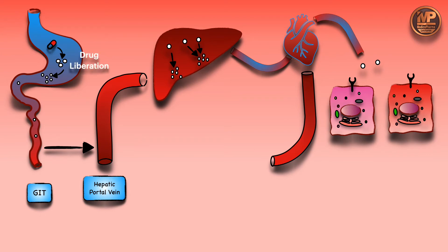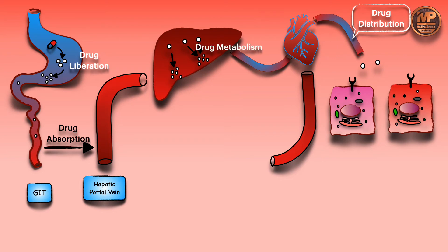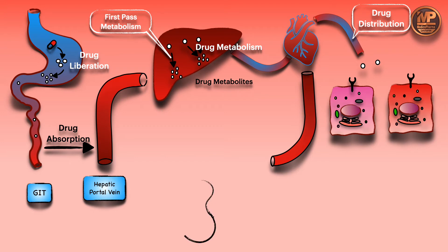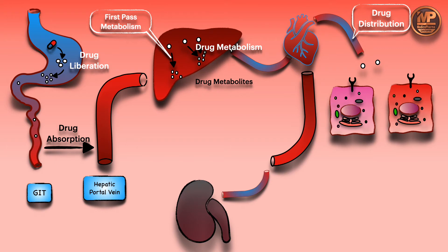To summarize the steps: drug liberation, drug absorption, drug distribution (from the heart to various organs), and drug metabolism (destruction in the liver, including first pass metabolism). The products of metabolism are called drug metabolites. Low molecular weight metabolites go via blood to the kidneys and are excreted in urine — drug excretion. High molecular weight metabolites mix with bile, enter the GIT, and are excreted in feces.